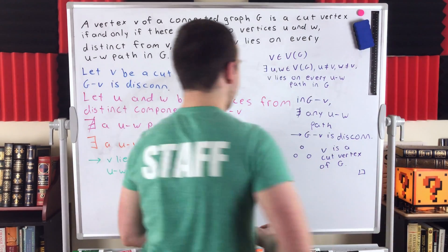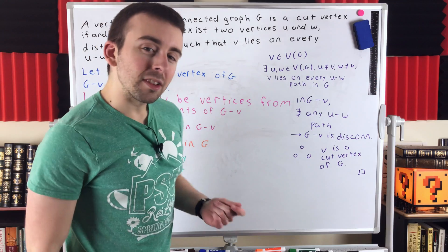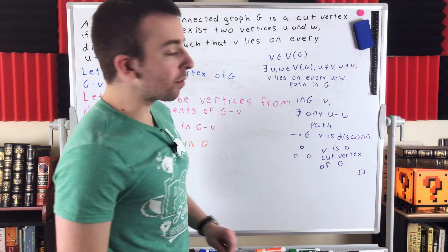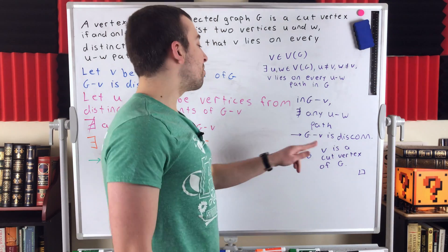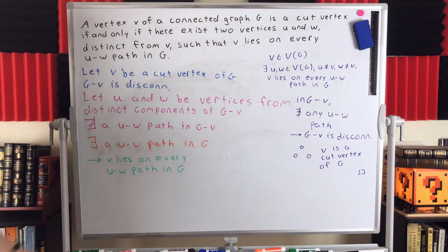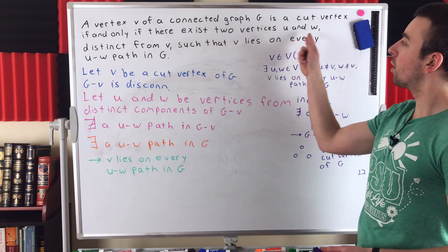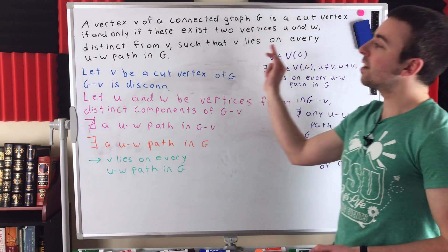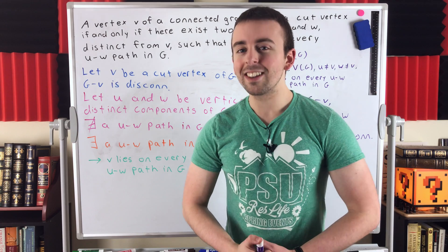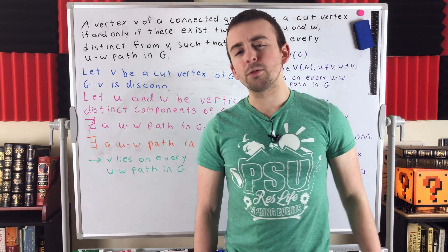And that concludes the proof. The other direction was: suppose we've got a vertex in our connected graph G, and suppose there exist two vertices distinct from V such that V lies on every UW path in G. Then we used that information to show that V must be a cut vertex of G — we showed that deleting V disconnects the graph. And that is our characterization of cut vertices: a vertex V of a connected graph G is a cut vertex if and only if there exist two vertices U and W distinct from V, such that V lies on every UW path in G. Hope this video helped. Let me know in the comments if you have any questions, need anything clarified, or have any other video requests. Thank you very much for watching, I will see you next time, and be sure to subscribe for the swankiest math lessons on the internet.